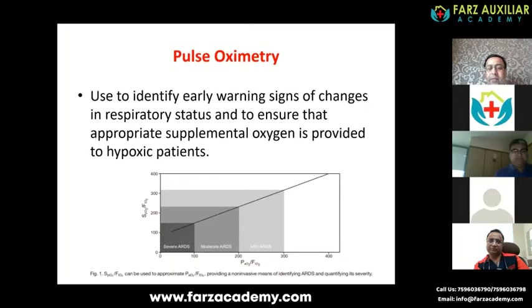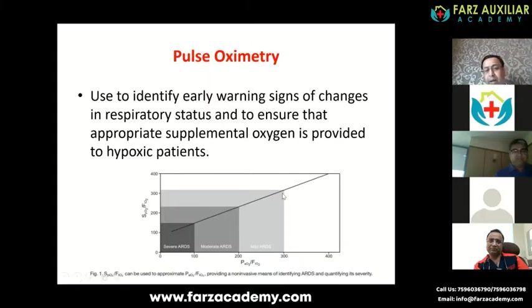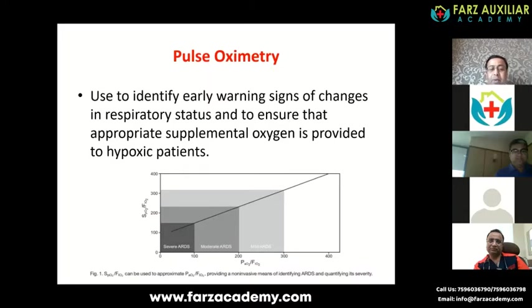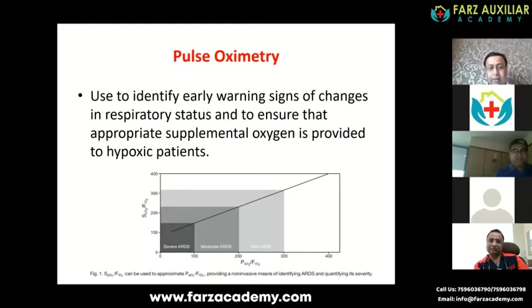SpO2 does not replace blood gases, but look at this chart — if we compare SpO2/FiO2 with PaO2/FiO2, we can to some extent justify and parallelly place these two parameters. The PaO2/FiO2 ratio is very important to understand and classify the severity of a patient's hypoxia. In mild ARDS, with a PaO2/FiO2 ratio of less than 300, the SpO2/FiO2 ratio is also around 300–320, so we can extrapolate SpO2/FiO2 when ABG is not readily available.